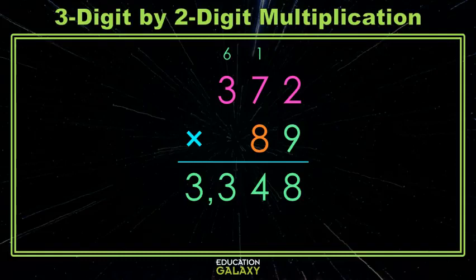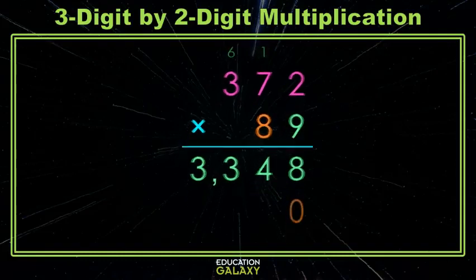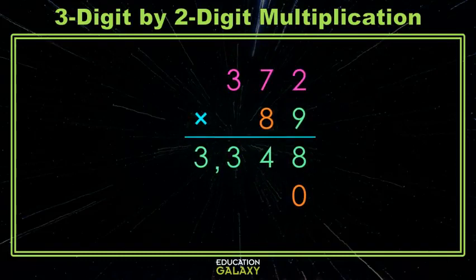So now we move to the tens place, the 8. So we are multiplying 372 by the 8, but remember that 89 is really 80 plus 9. So we're multiplying 372 by 80, and that's why we put that 0, and sometimes we call it a placeholder.